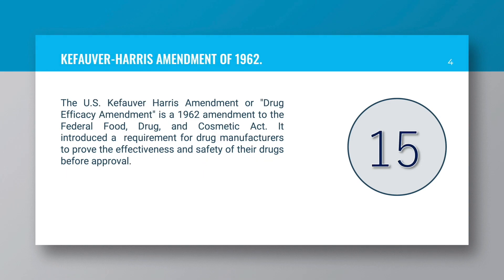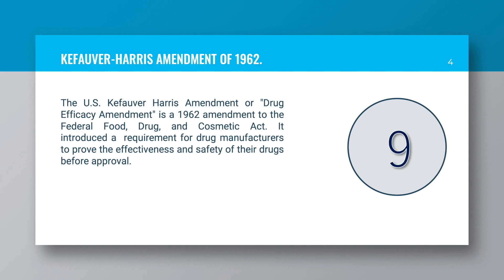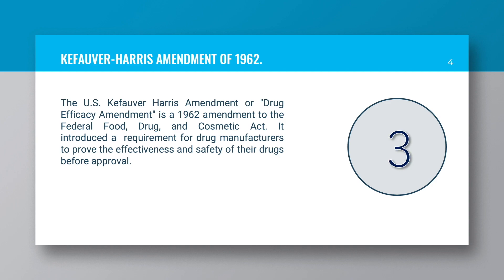Kefalver-Harris Amendment of 1962: The US Kefalver-Harris Amendment, or Drug Efficacy Amendment, is a 1962 amendment to the Federal Food, Drug and Cosmetic Act. It introduced a requirement for drug manufacturers to prove the effectiveness and safety of their drugs before approval.